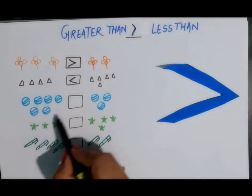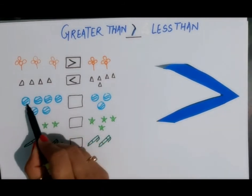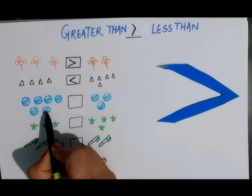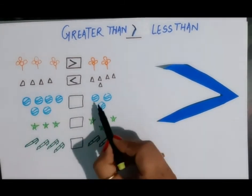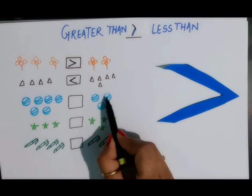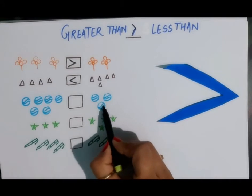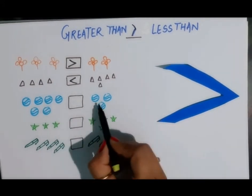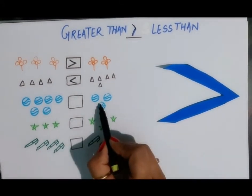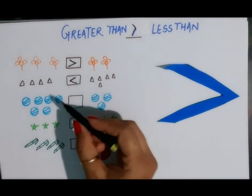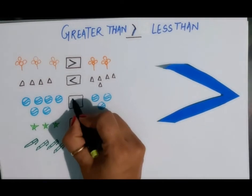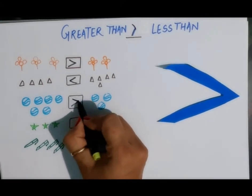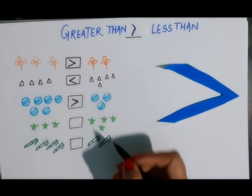Next — how many balls are there? One, two, three, four, five, six on this side, and one, two, three on the other side. Six is greater than three, so we are going to use this sign.